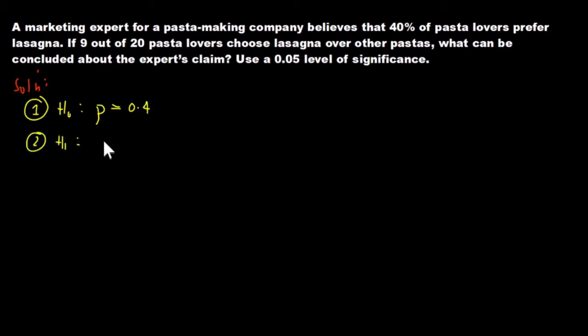Second is the alternative hypothesis, which is p greater than 0.4. We will say greater than because we expect it will be higher, not lower. If our Z test has a lower value, it will be included in the null hypothesis. We will refute the claim of the marketing expert if it is higher than 0.4 or 40%.